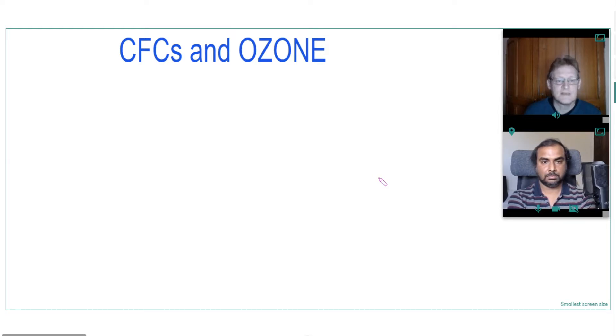So today we're going to have a look at CFCs and ozone. CFCs stand for chlorofluorocarbons. And if we draw a chlorocarbon to start with, it's just carbon with fluorines and chlorines on. So we could have three chlorines and a fluorine. So this would be trichlorofluoromethane.